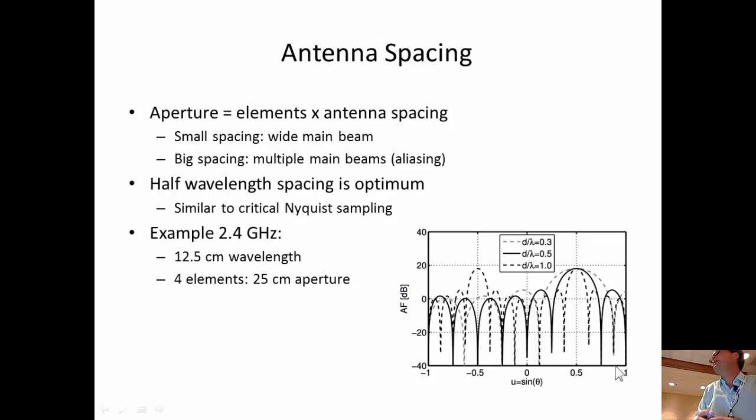But if you make it too big, things get aliasing and it becomes quite messy. So if you have too big spacing, you have many multiple main beams, and then you have what you have in the frequency domain, you also have in the spatial domain. It's kind of aliasing.